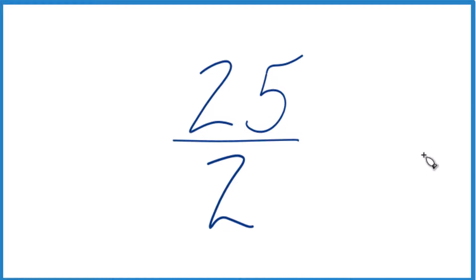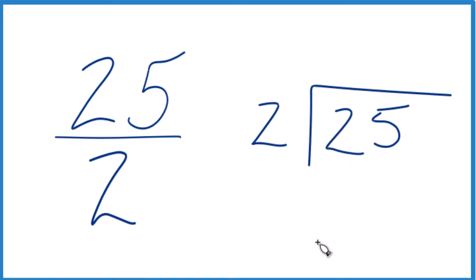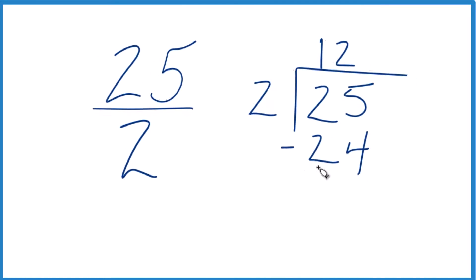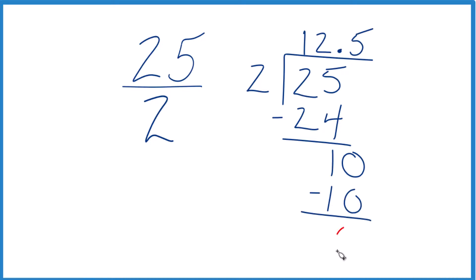Let's take and do this longhand, see what we get. We take 25 and we're going to divide that by 2. So 12 times 2, that's 24. When I do that, I subtract and I get 1. 2 doesn't go into 1, but if I put a decimal point here, call this 10. Now 5 times 2, that's 10. Subtract and no remainder.